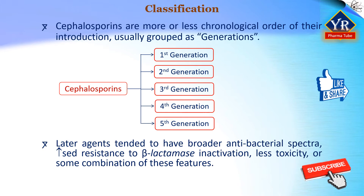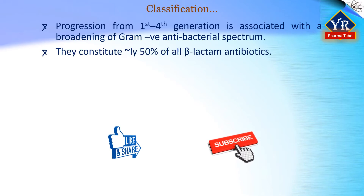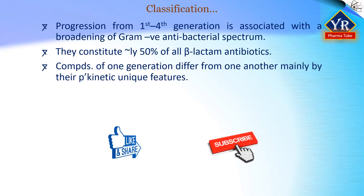This has become a useful classification since newer beta-lactams were introduced primarily to overcome the shortcomings of the earlier compounds. Thus, later agents tended to have a broader spectrum of antibacterial activity, increased resistance to beta-lactamase inactivation, less toxicity, or some combination of these features. In general, progression from first to fourth-generation cephalosporins is associated with a broadening of the gram-negative antibacterial spectrum. They constitute approximately 50% of all beta-lactam antibiotics available in the market. Compounds of one generation differ from one another mainly by their pharmacokinetic features, although there may be differences with respect to separate microorganisms.